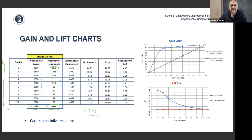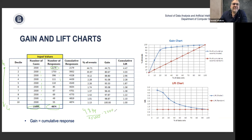The gain chart shows cumulatively how many responses we get as we take our ranked buckets compared to random selection. If we randomly assigned customers, picking 10% of customers would get 10% of responses, 30% of customers would get 30% of responses. But with ranking, taking the first 10% of customers yields 44–71% of all responses.